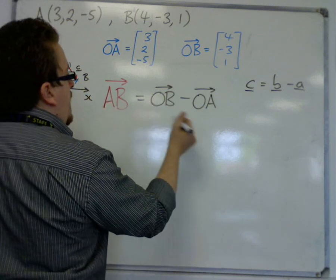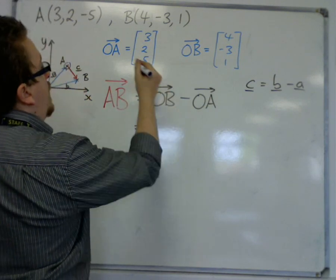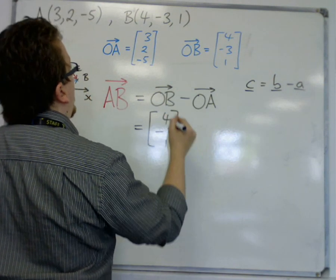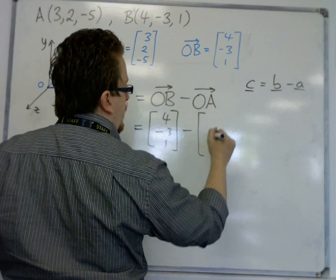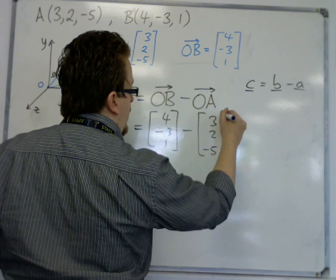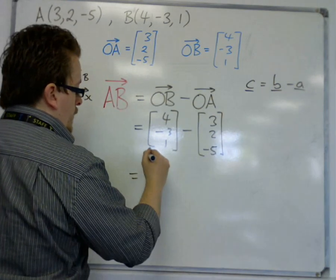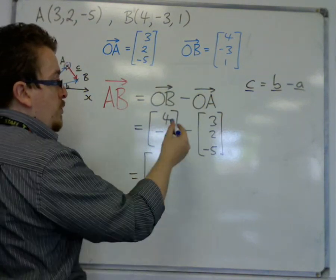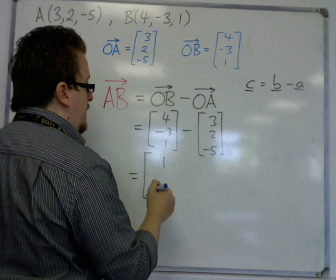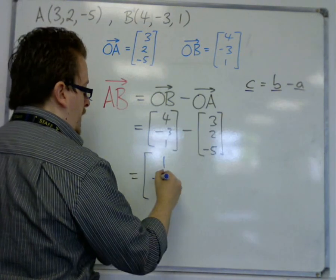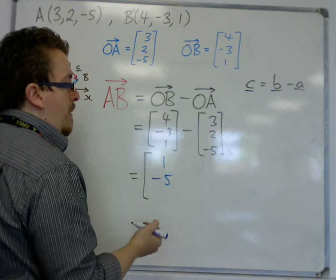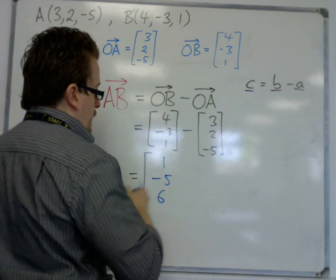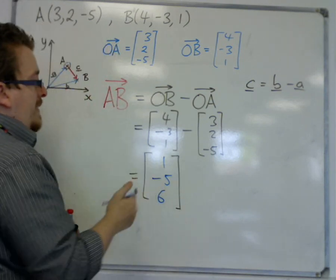So if AB is OB minus OA, OB was (4, -3, 1) and OA is (3, 2, -5). In this example, what we're going to get - and these subtract normally as you would expect - 4 take away 3 is 1, minus 3 take away 2 is minus 5, and 1 take away minus 5 is 6. And that is the vector AB.